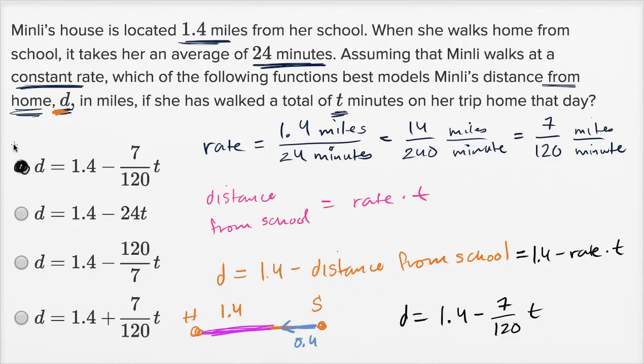And it's fun to look at the other choices and to think about how could we have ruled them out fairly quickly? This one has 1.4 minus 24t. Well, this isn't the rate—that's how long it takes her to walk. So you could rule that one out. This one is 1.4 minus the reciprocal of the rate, so that's a strange answer. And this one makes it look like she's getting further and further from home as time gets bigger. This one does correctly say at time zero, she's going to be 1.4 miles from her home, which is accurate because at time zero, she's at her school. But then after one minute, after two minutes, after three minutes, she's going to get further and further away from her home based on this model. So this would be a case where she's walking away from home from her school. So you would rule that one out as well.